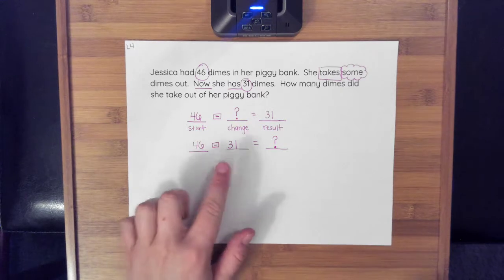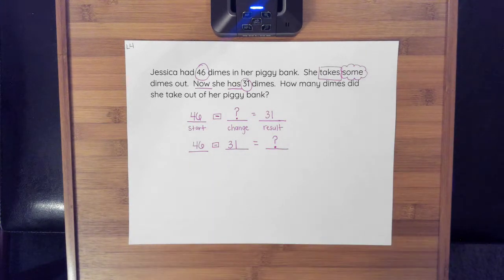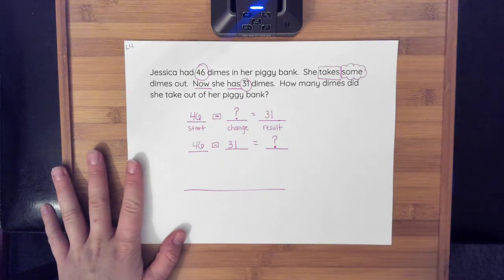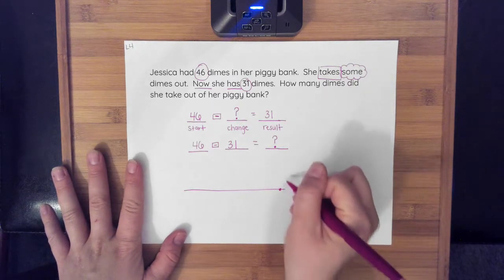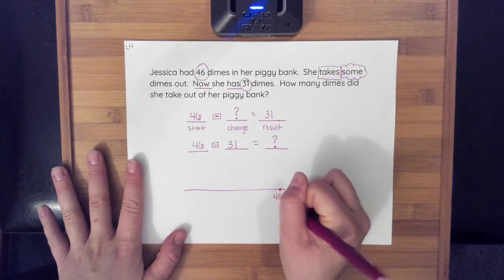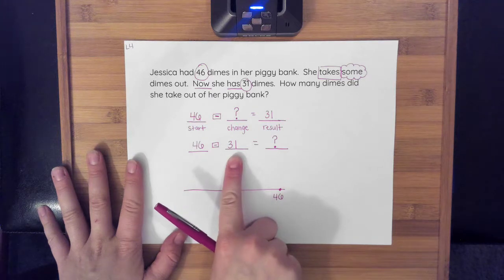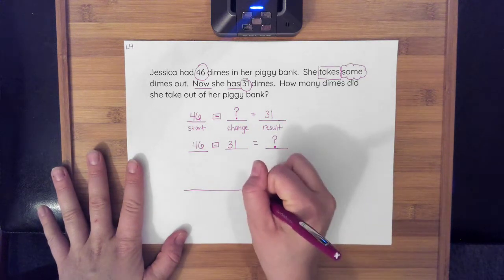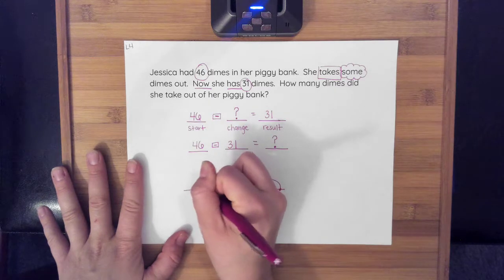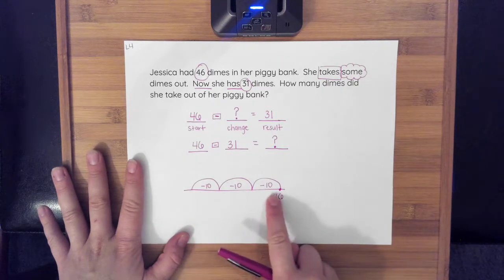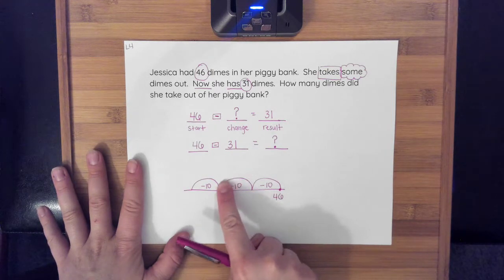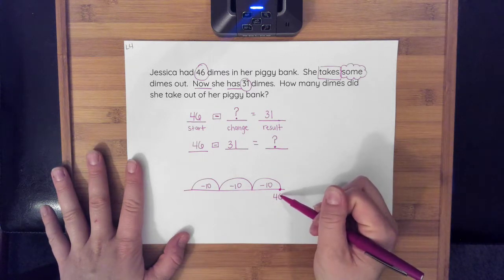I'm going to use a number line today to figure this out. I'm going to draw my line. Remember when I do a number line and I'm doing subtraction, I start at the right and I jump backwards because I'm taking away. In this case, I start with 46. If I look at 31, I know I'm going to take away three tens. So I'm going to do three jumps for 10. Each of these jumps are taking away 10. Remember when you do a number line, you cannot have any gaps. I can't have any spaces because I want to land right on that number and start from that number and jump again.